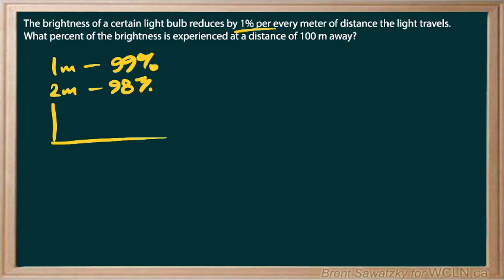And so that would be a linear relationship, and it would look like that, just a line showing the brightness as we move away from that bulb. But what's happening here is it's 1% every meter, and that means it's 1% of the previous value. So after 1 meter, certainly 99%.